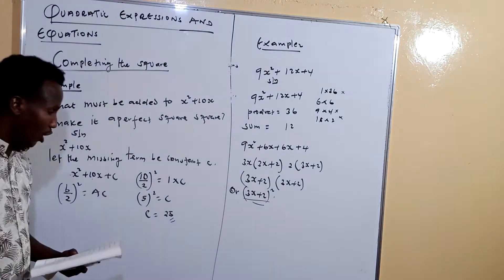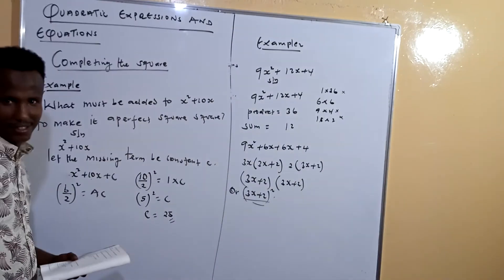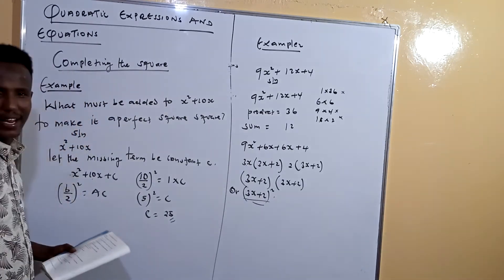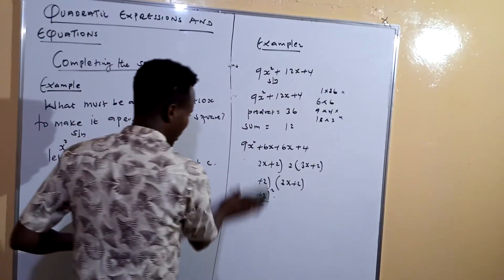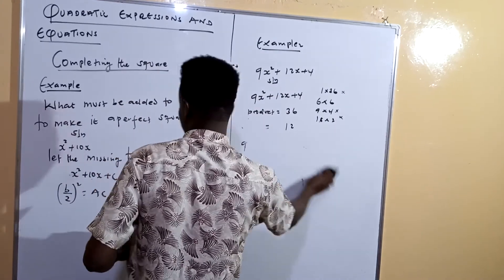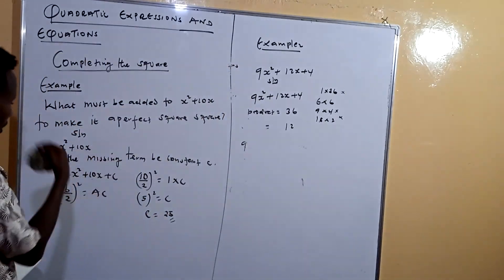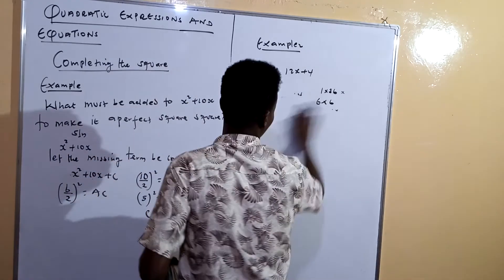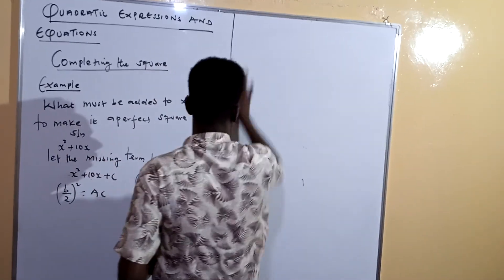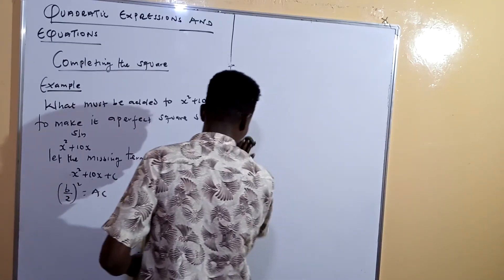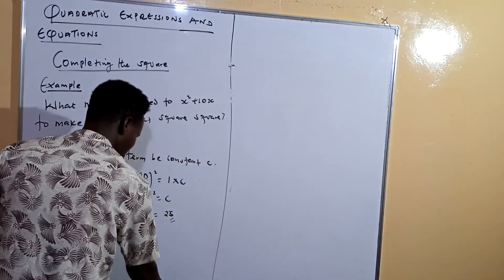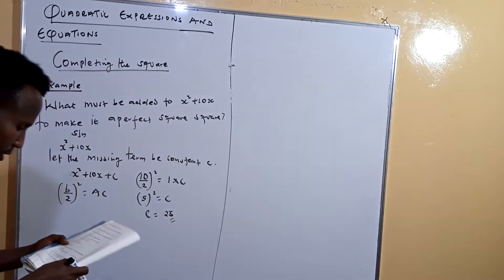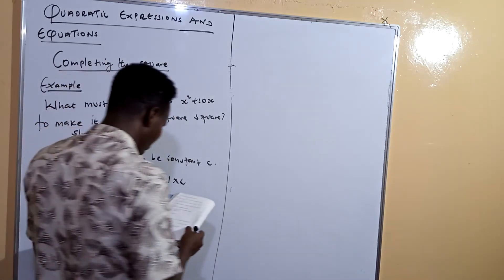We've been finding the constant c. Now let's also see how to find b or a, because I need to teach you all three cases so that during the examination you'll be able to answer any question.